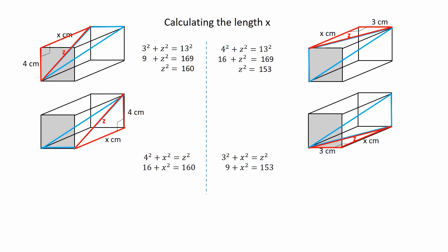Substituting the value of z squared and evaluating gives 16 plus x squared equals 160 on the left, and 9 plus x squared equals 153 on the right. Subtracting 16 from both sides of the left equation gives x squared equal to 144, and subtracting 9 from both sides of the right equation also gives x squared equal to 144.